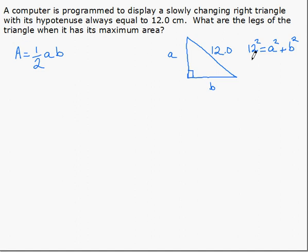It doesn't matter which one. If we solve for A, we get the square root of 12 squared is 144 minus B squared.